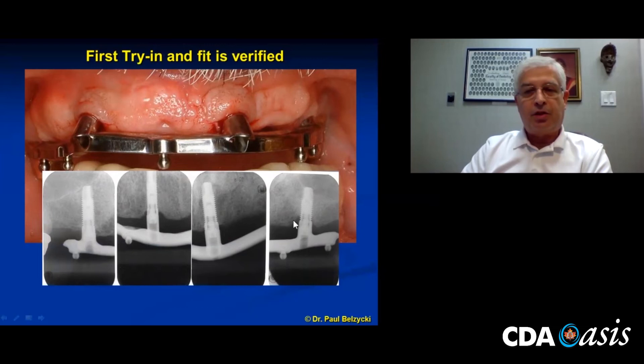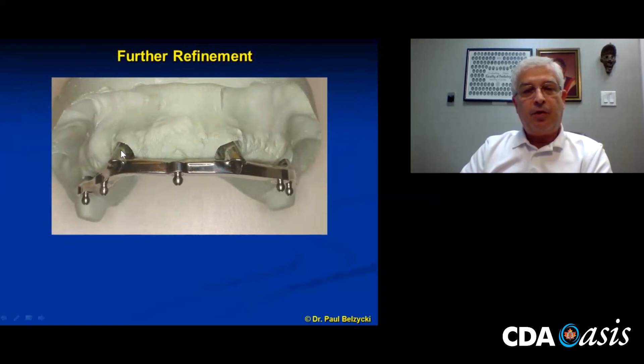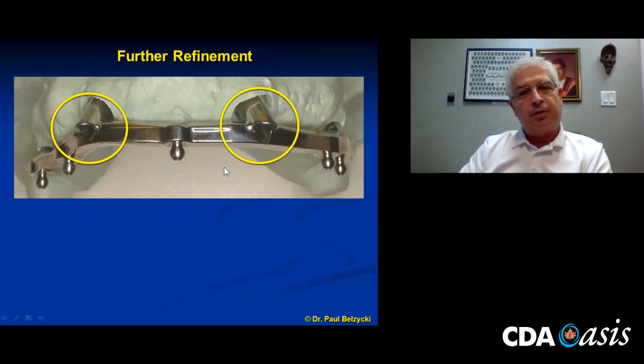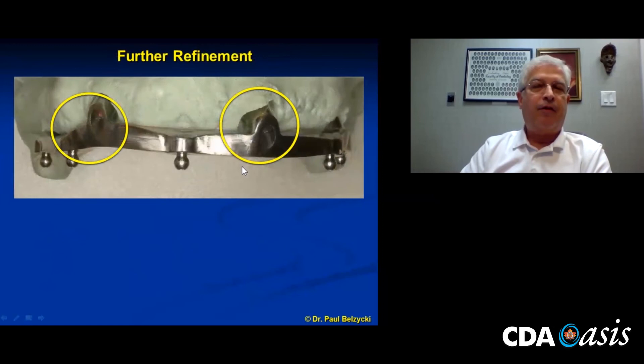I thought I was going to have a problem — that flange is going to be so too buccal, it'll puff his lip up quite a bit. So we had to do further refinement. Here is the marriage of high tech, but it still requires clinical skill, clinical experience, some degree of artistry, and an image in your mind of where you want the teeth to be. You just can't accept what comes back from a lab or Nobel BioCare or any of the other manufacturers — you have to play with these things.